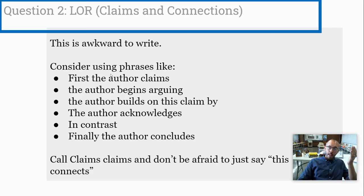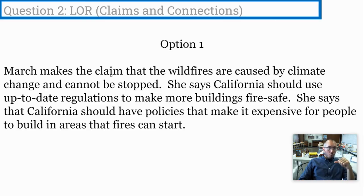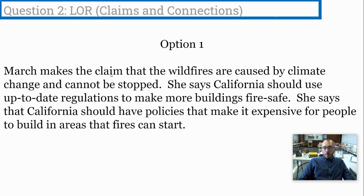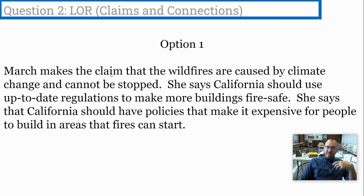For question two on the line of reasoning, here is what not to do. Option one: 'March makes the claim that wildfires are caused by climate change and cannot be stopped. She says California should use up-to-date regulations to make more buildings fire safe. She says California should have policies that make it expensive for people to build in areas where fires can start.' This identifies the claims but does a horrible job explaining connections — no evidence that these claims are developed, and no relationship shown between them. If you produce something like this for question two, you're wrong.